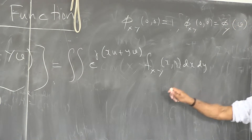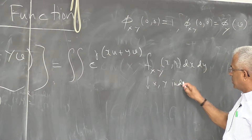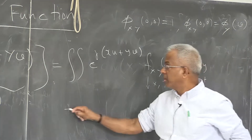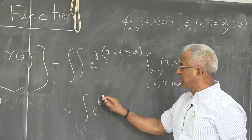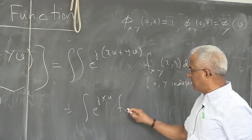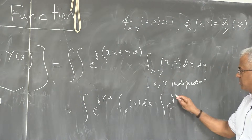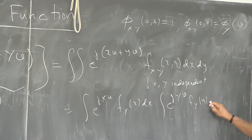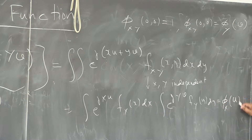Also, notice that if X and Y are independent, then you can split the expectation into two functions. This becomes the integral of e raised to j·x·u times f_X(x) dx, multiplied by the integral of e raised to j·y·v times f_Y(y) dy. So if X and Y are independent, the joint characteristic function is the product of the individual characteristic functions.